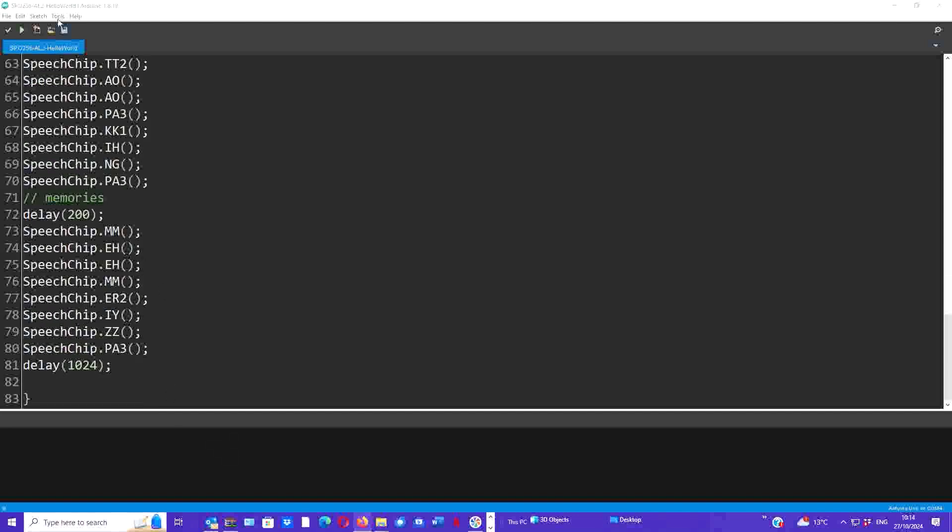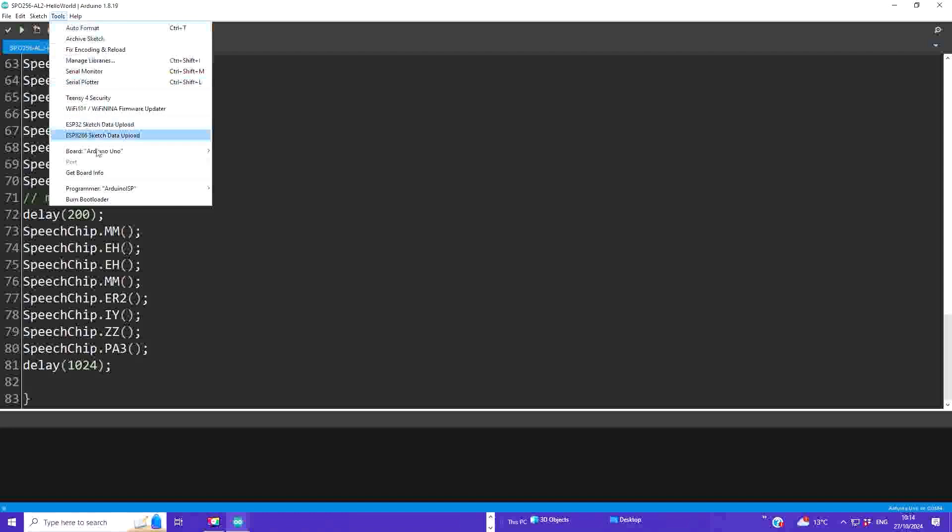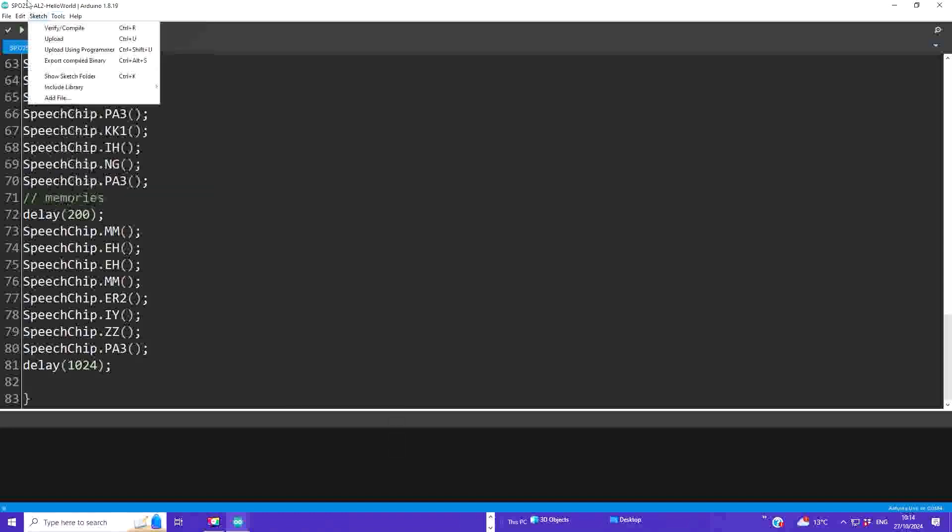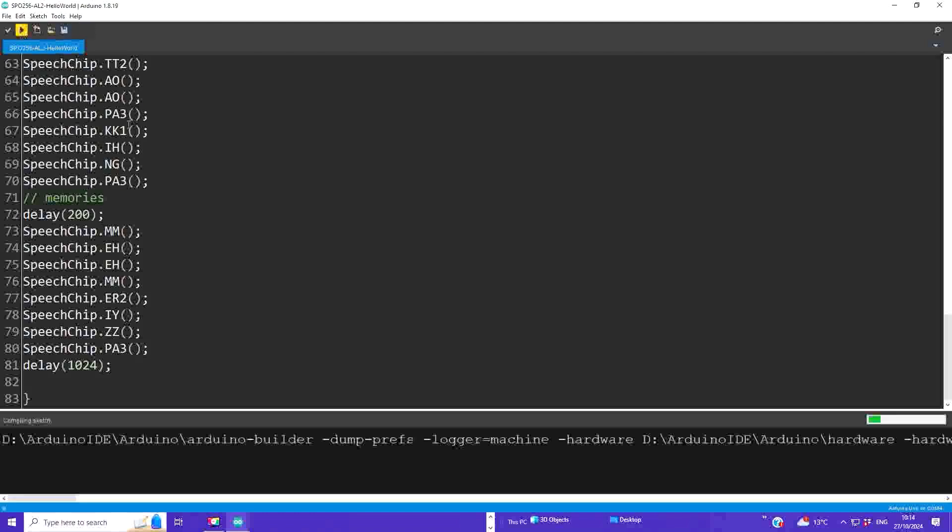So once you select the right board, and for us that's Arduino Uno, make sure you select the right COM port, press compile upload, and you're good to go.